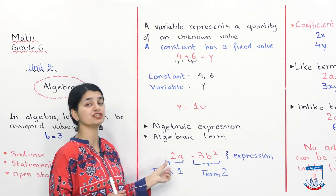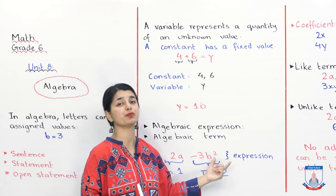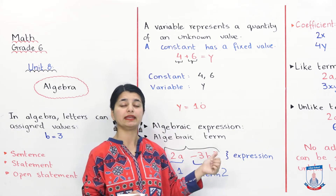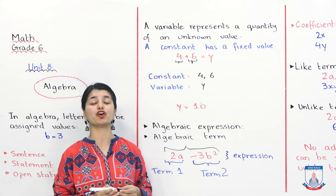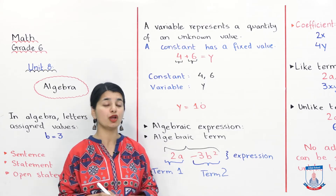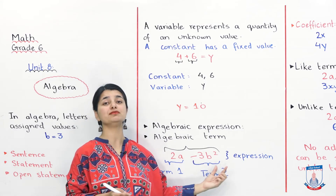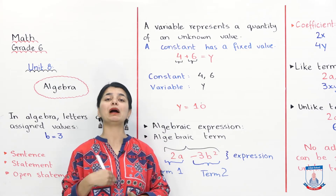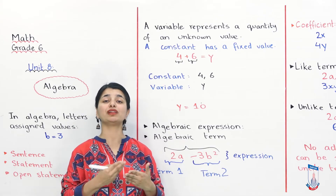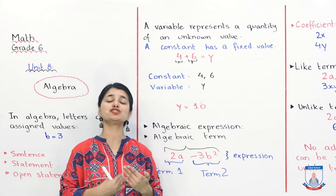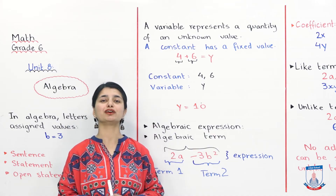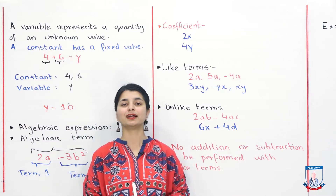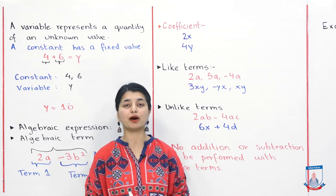So here we have one term that is 2a, and another term that is minus 3b squared. Together they make our algebraic expression. These two different terms are our algebraic terms. If there were also plus 4a written here, that would become a third term.